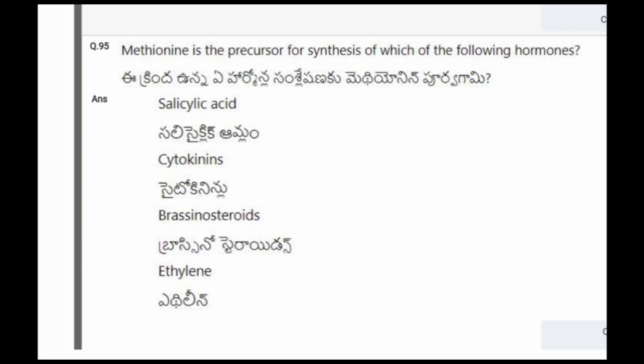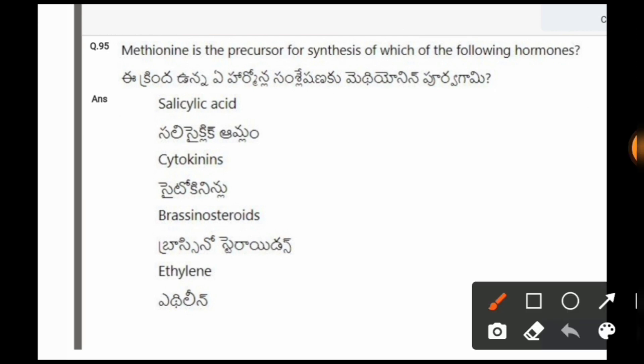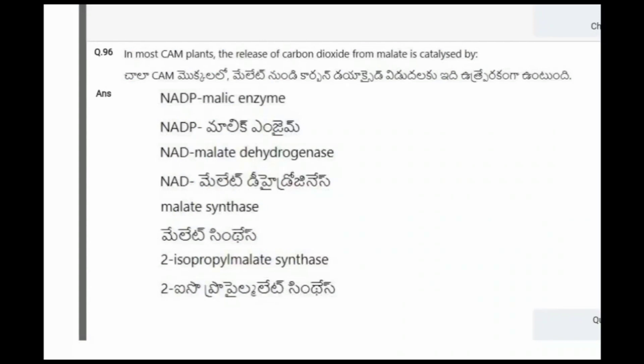Next question: Methionine is the precursor for synthesis of which of the following hormones? The options are salicylic acid, cytokinins, brassinosteroids, ethylene. The correct option is ethylene.